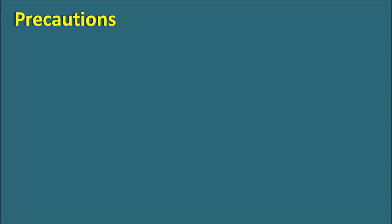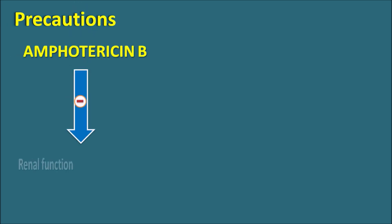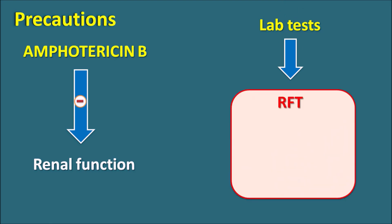What are the precautions? An important precaution is that Amphotericin B can reduce renal function. Before and during therapy, lab tests should be done to assess patient conditions — including renal function tests, liver function tests, complete blood count (CBC), and electrolyte concentrations — because Amphotericin B can produce renal dysfunction, liver dysfunction, and hypokalemia (decreased potassium levels) which may cause cardiac arrhythmias.